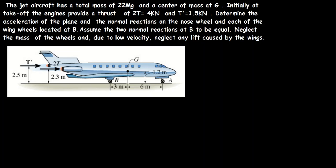To find the acceleration of the plane, we are going to consider that the sum of forces in the x-direction should be equal to the mass times the acceleration of the plane in the x-direction. We will write down the values that we know and then solve for the unknown, which is the acceleration in the x-direction.